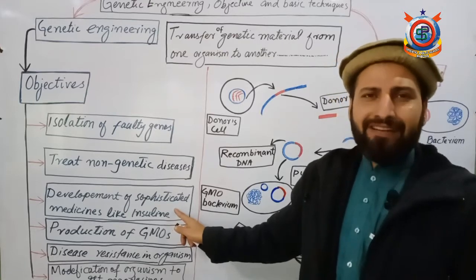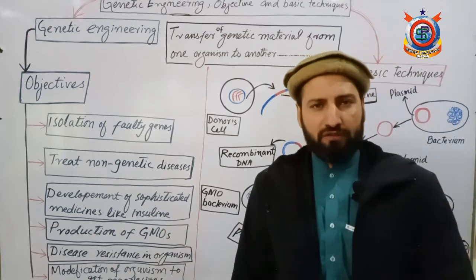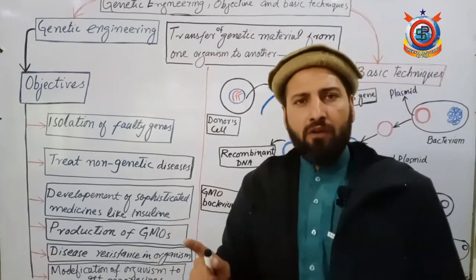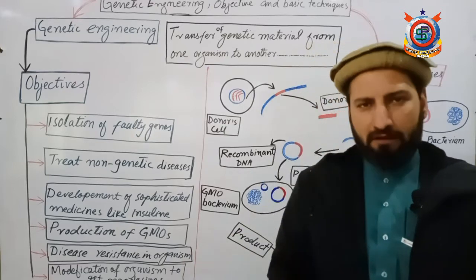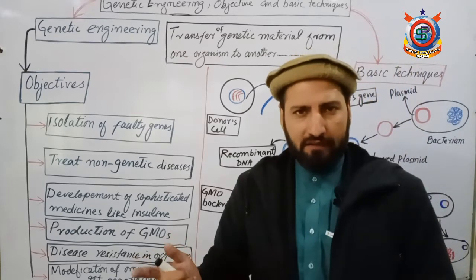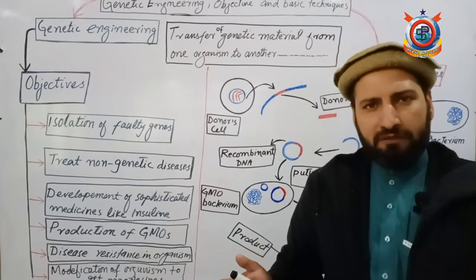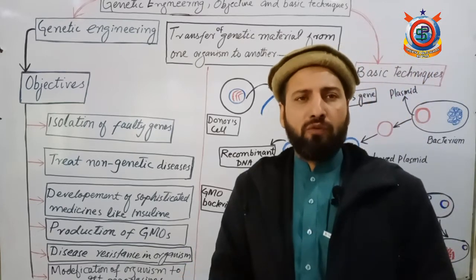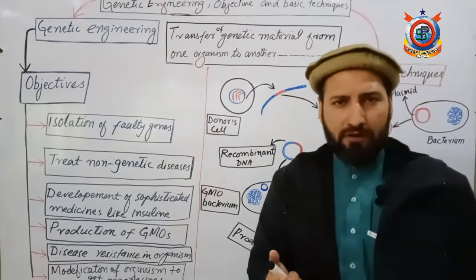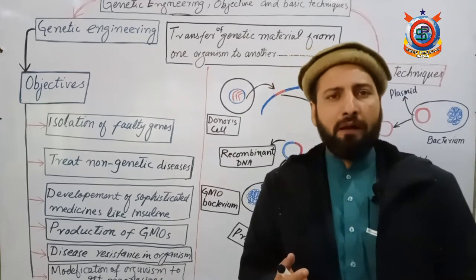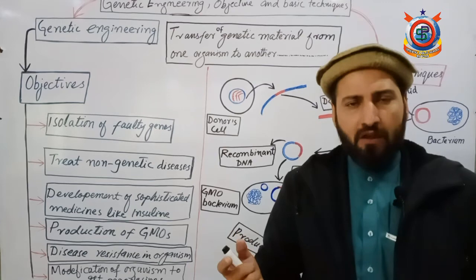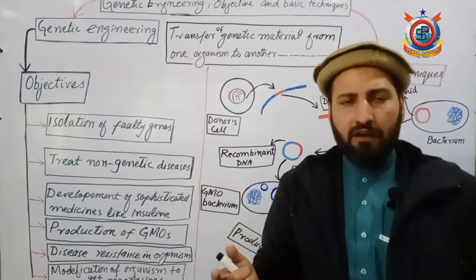The next objective is the production of GMOs — Genetically Modified Organisms. Genetic engineers today are modifying plants and animals so that we can obtain maximum food from them. In the market you see many fruits, vegetables, and animals that produce very large quantities of milk and protein — these are all genetically modified organisms. The benefit they provide is that in less time they give us more food, and the problem of food shortage has been resolved through them.